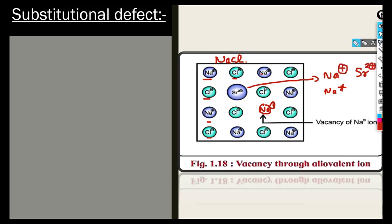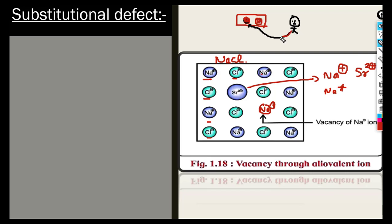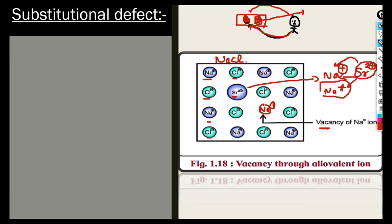Let me explain this beyond the textbook. Suppose in a classroom, two students are sitting on a bench — student one and student two. Now a third student comes and takes their place. But at a time, this new student can only sit in one place, so the other seat is still vacant. Apply this same concept here — Sr²⁺ occupies a site inside the crystal.